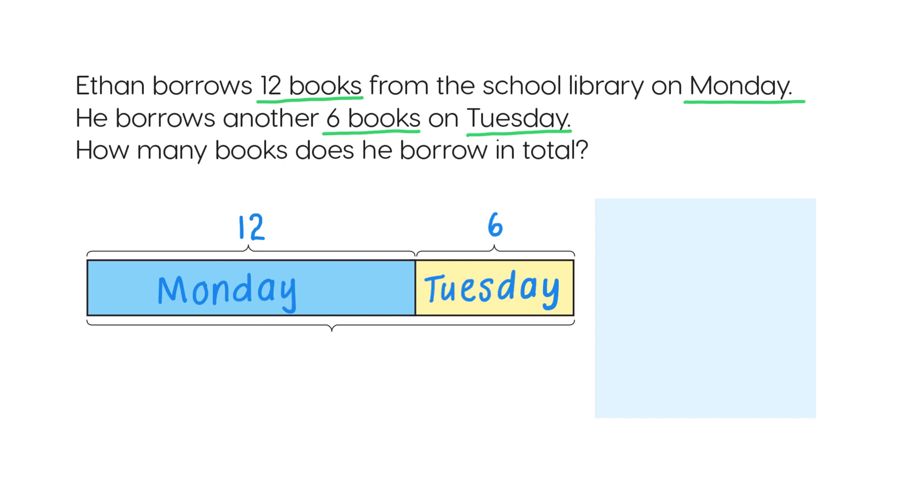To find the total number of books, we add. 12 plus 6 equals 18. So Ethan borrows 18 books in total.